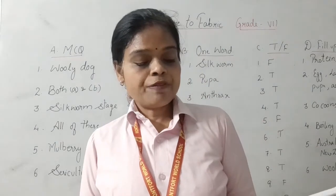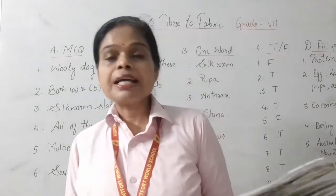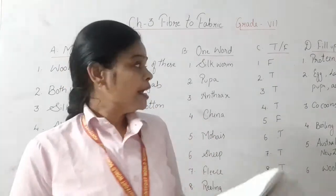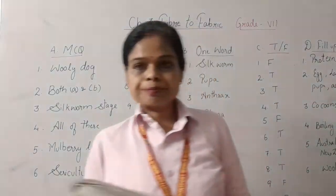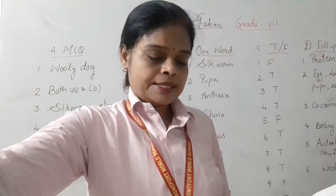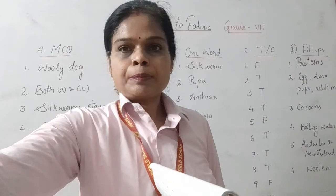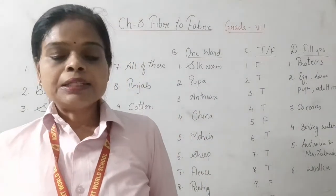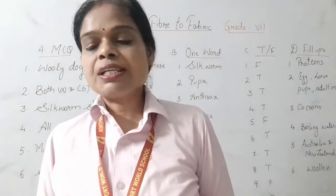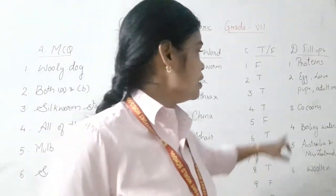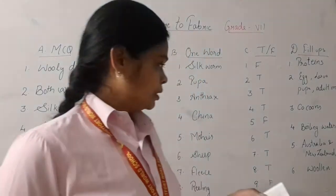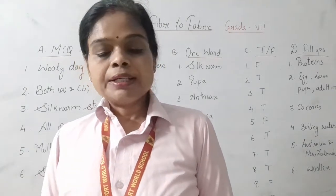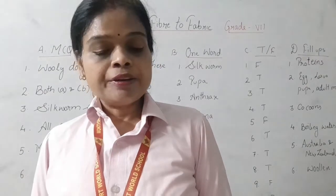Fill in the blanks: The sticky fluid secreted by larvae from the salivary gland is proteins. The four stages in the life of the silk moth are egg, larvae, pupa, and adult moth. Silk is obtained from cocoons of the silkworm; the cocoons are put in boiling water which kills the worms and loosens the filament. The best wool comes from Australia and New Zealand. Woolen fibers are rough to touch.